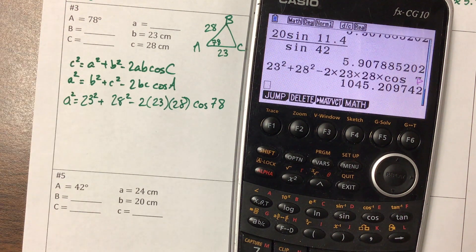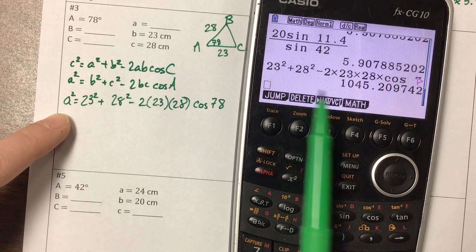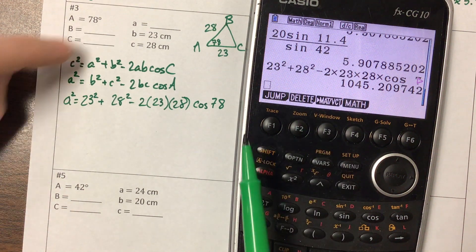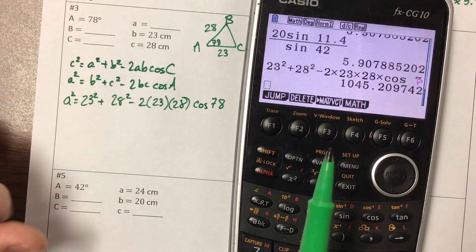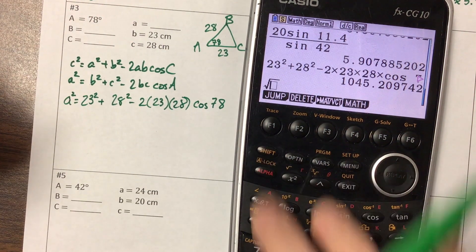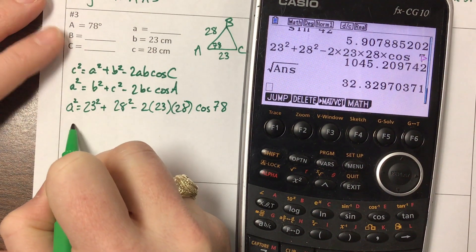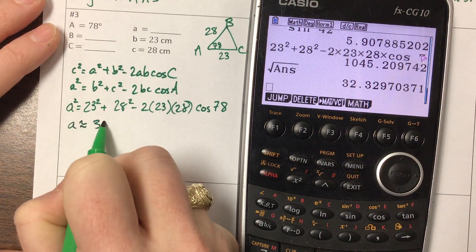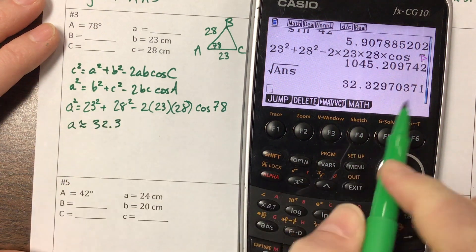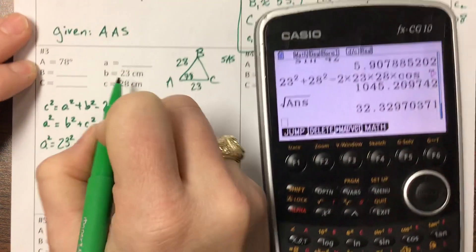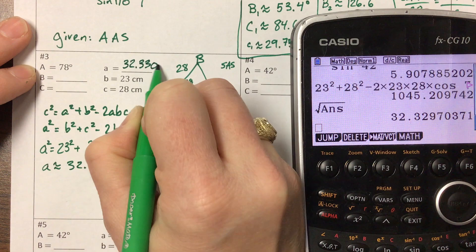Now the thing that I'm afraid sometimes students forget to do is they forget to take the square root. Because notice we just solved for a². But think about it, does that make sense to have a triangle with sides 23, 28, and a thousand? It does not. So we'll take the square root of that answer. And so our third side, our a value, is approximately 32.330 centimeters.